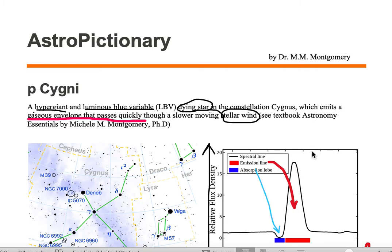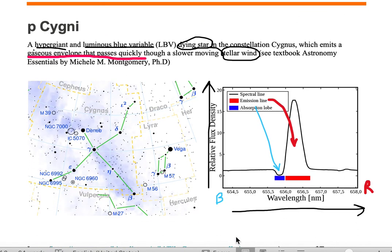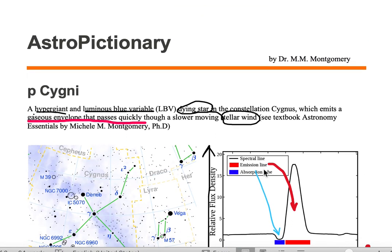P. Cygni is a hypergiant and a luminous blue variable. In other words, it's a dying star. It's located in the constellation Cygnus, and it emits both a gaseous envelope and a stellar wind. The gaseous envelope travels faster from the object than the stellar wind, generating this P. Cygni profile in the spectrum.